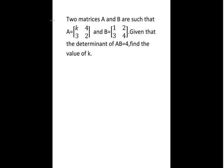So, first thing is to get AB, that is matrix A multiplied by B. That is K, 4, 3, 2, multiplied by matrix B, which is 1, 2, 3, 4.